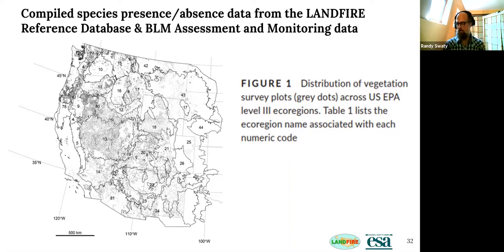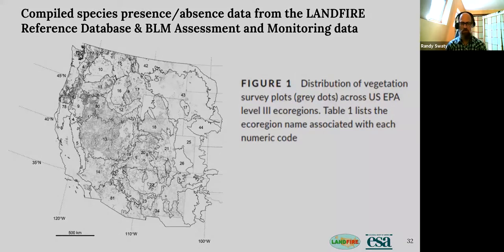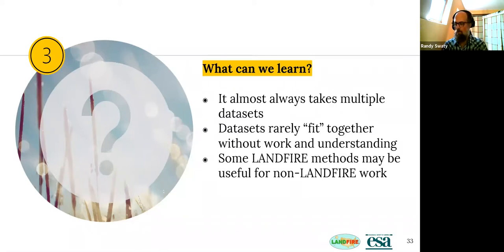The authors used data from the reference condition database and also from the Bureau of Land Management's Assessment and Monitoring Inventory database to build a training set for their modeling — a really clever approach. As you can see, there are a lot of plot dots across the West, though some areas have fewer. If you have georeferenced plot data with fire, fuel, and vegetation information, we would love to talk with you. It's very rare you get away with just one dataset — these folks contended with multiple datasets and did a great job fitting things together and being transparent about their decisions.